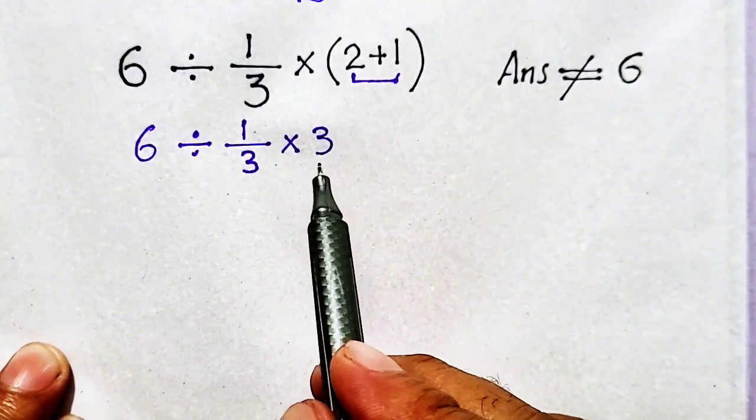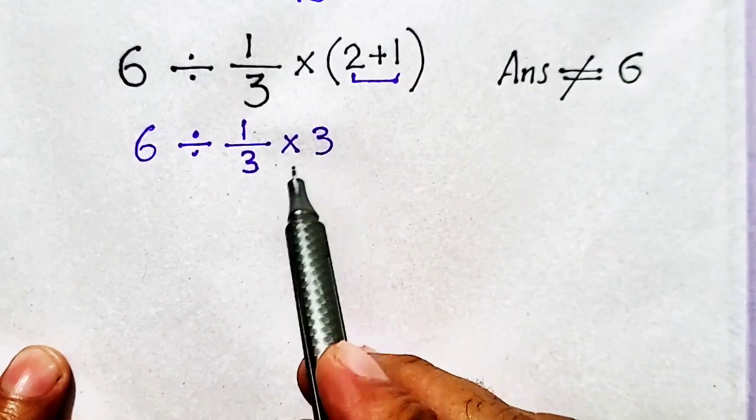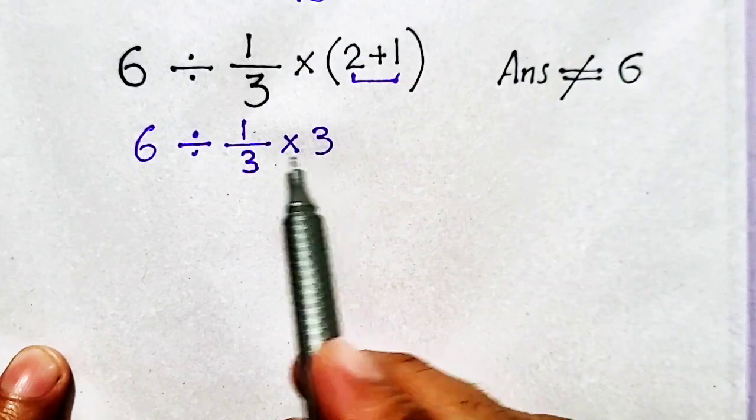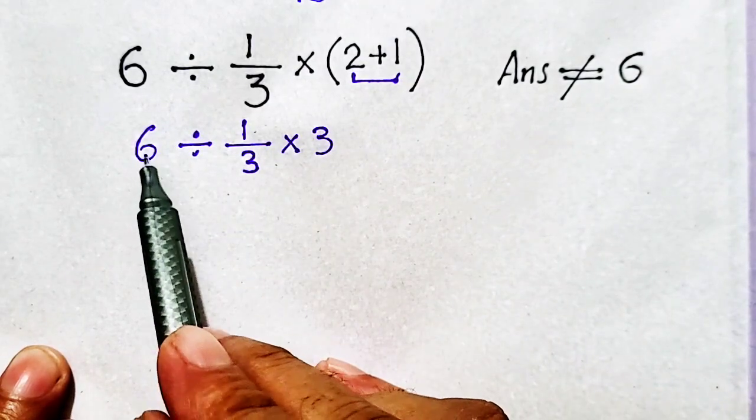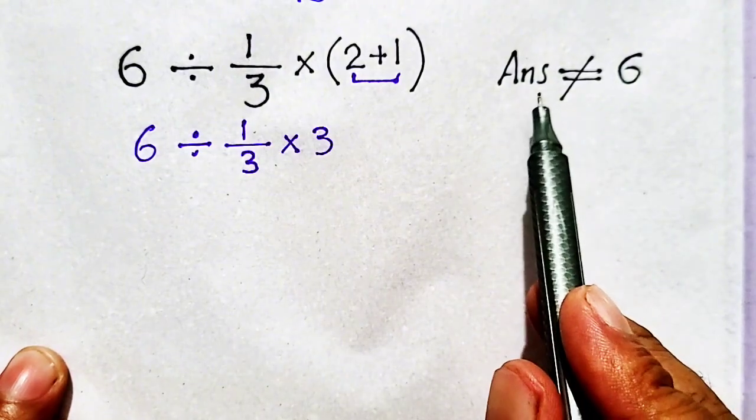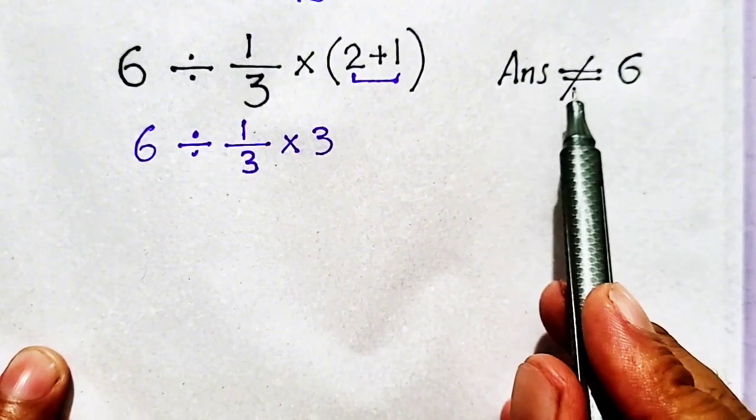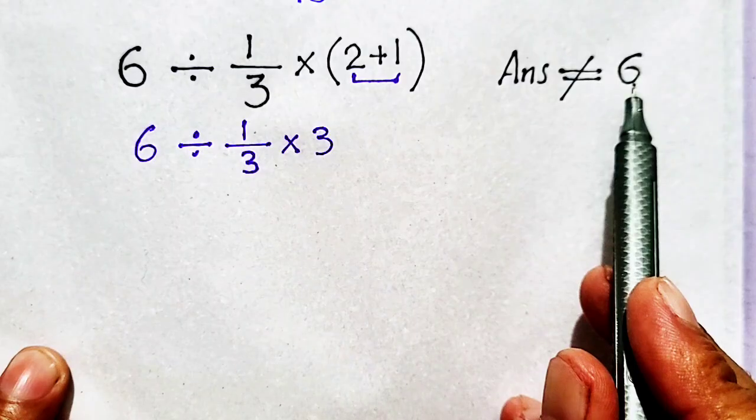Now, it is quite simple. 3 and 3 are cancelled, so our answer will be 6. But I have mentioned that answer should not be equal to 6.